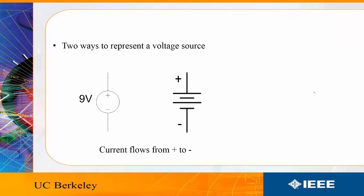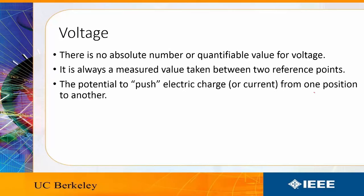There are two ways to represent a DC voltage source and they are both illustrated below. The current will then flow from the positive to the negative terminals. The most important takeaway from voltage is that there is no absolute number or quantifiable value for voltage. It is always a measured value taken between two reference points.